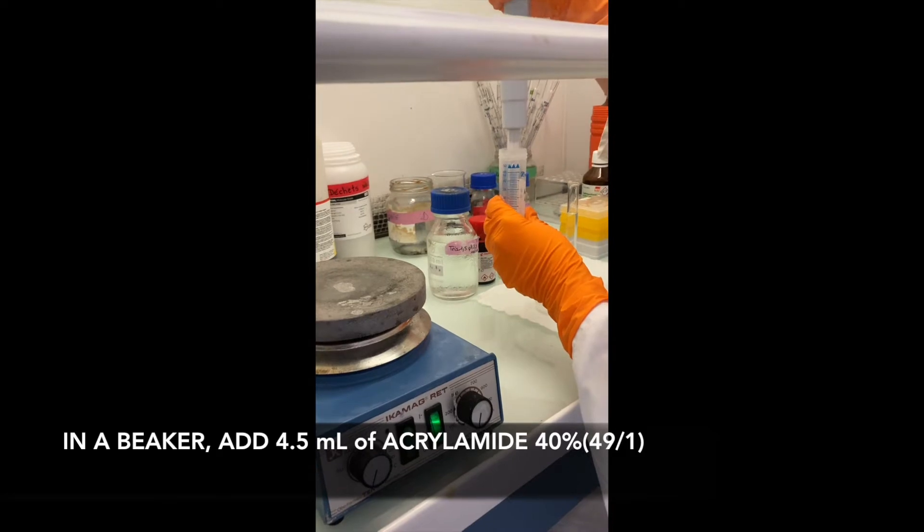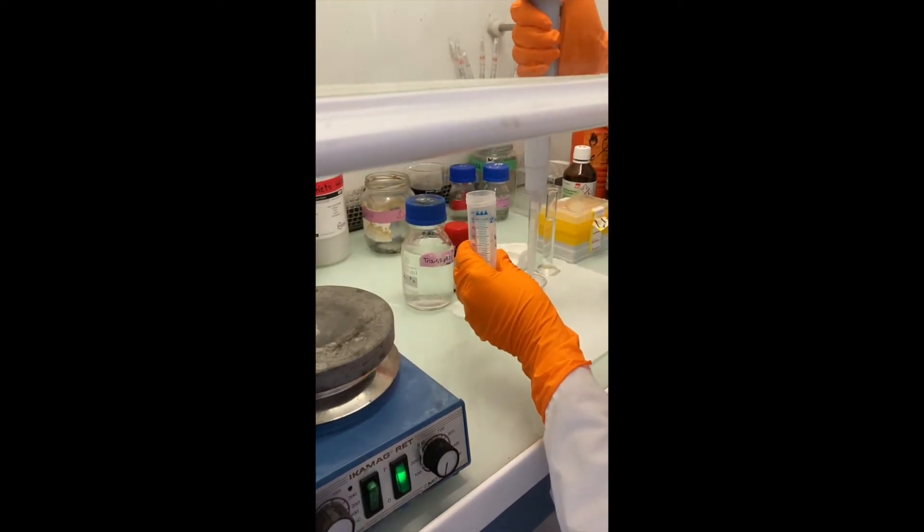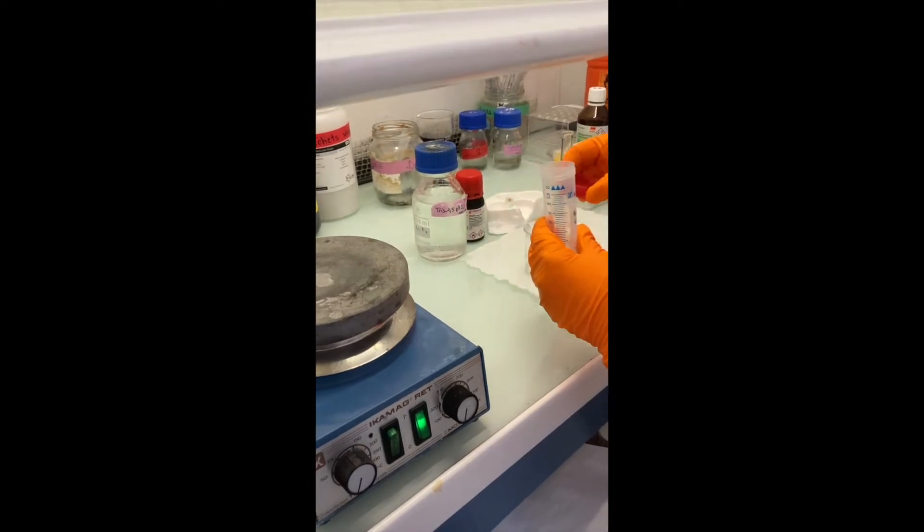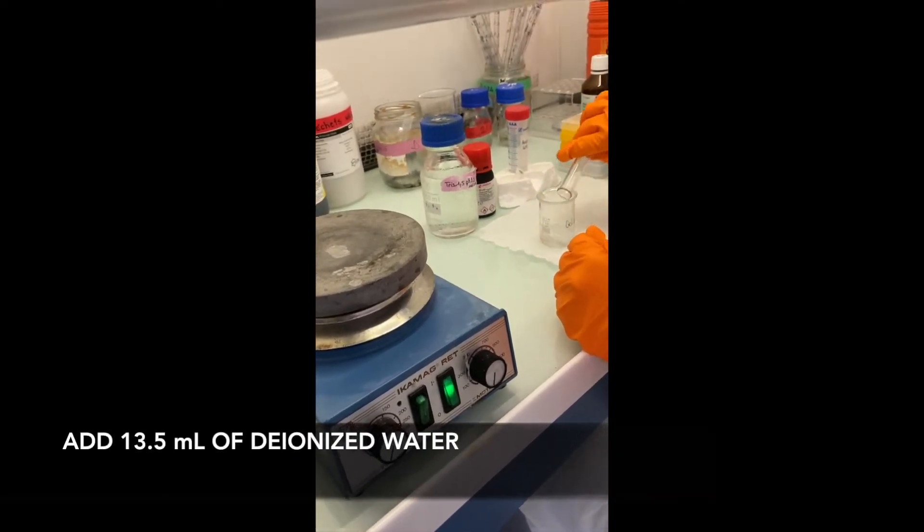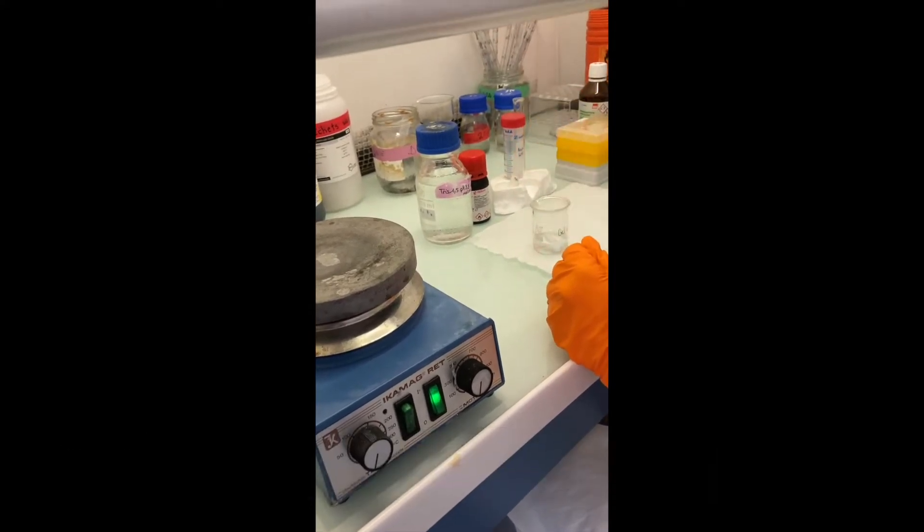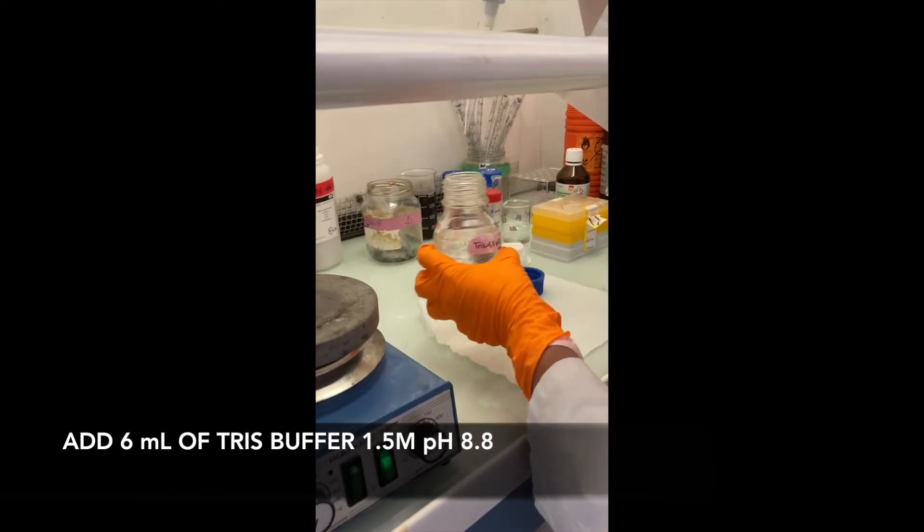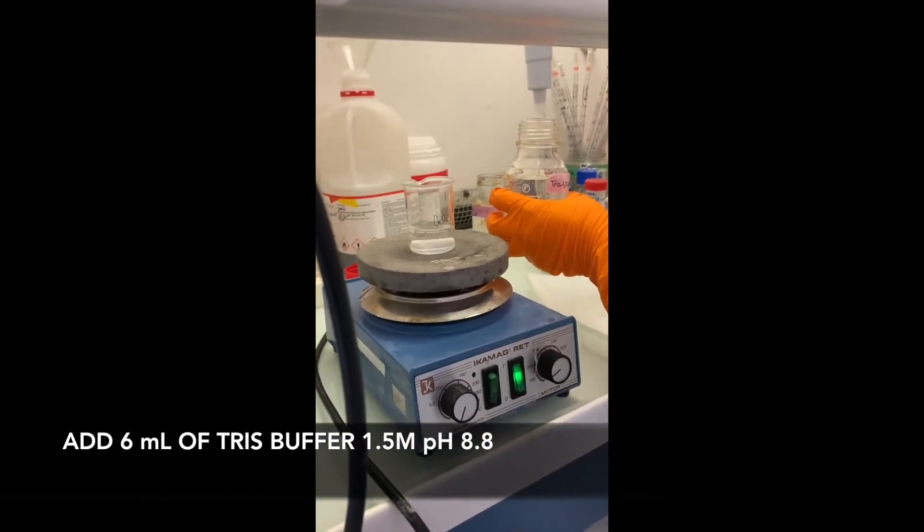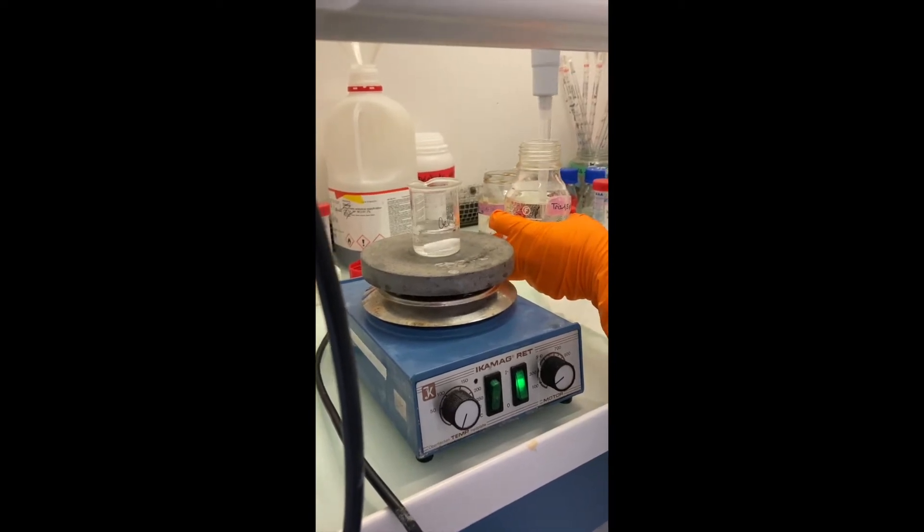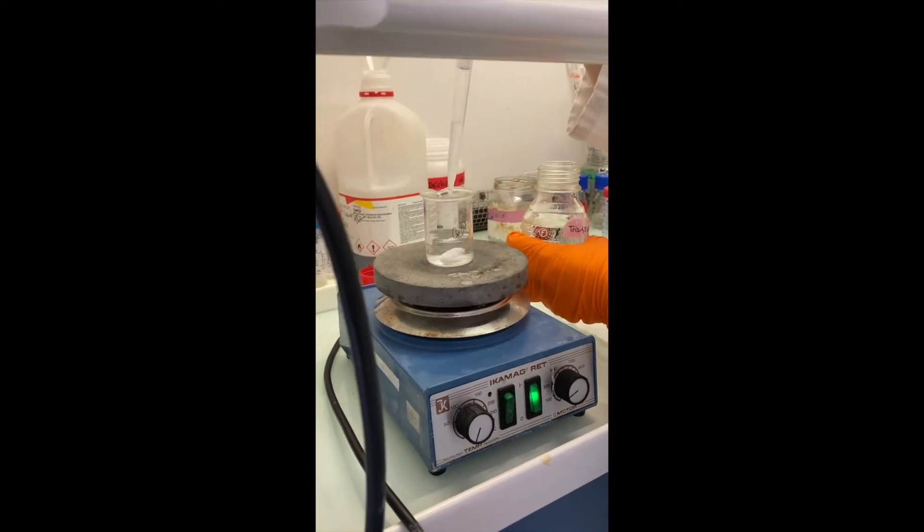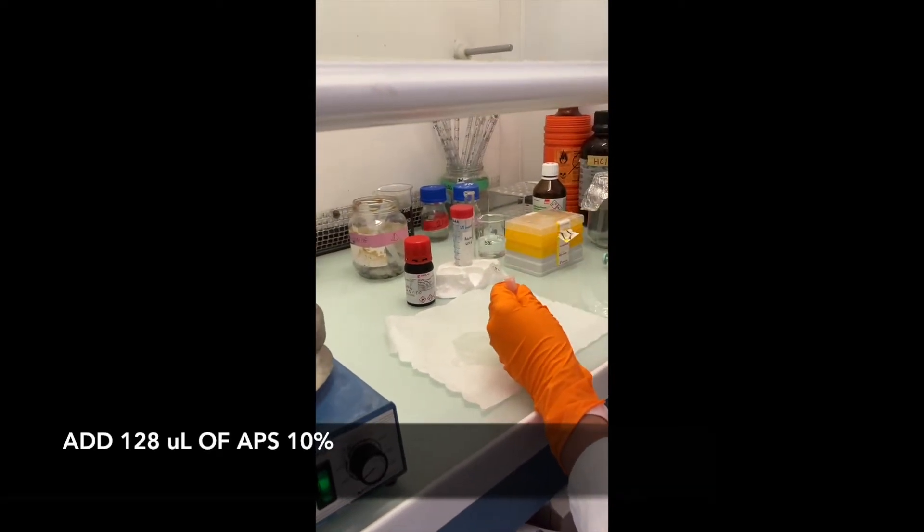In a beaker with a stirrer add 4.5 milliliter of acrylamide 40%, add 13.5 milliliter of water, then add 6 milliliter of the tris buffer, and add 128.5 microliter of APS.